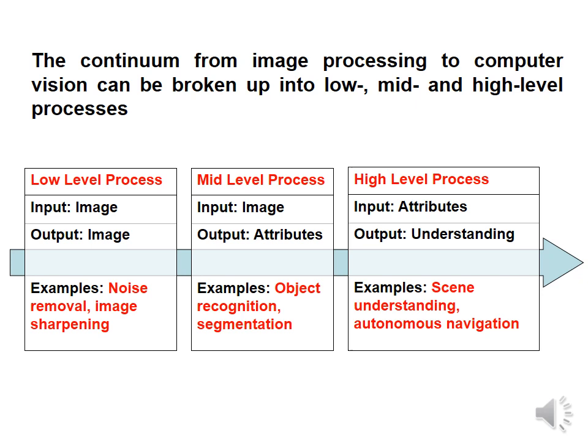In a low-level process, the input is an image and the output is also an image. In a mid-level process, the input is an image but the output is attributes — meaning characteristics of the image need to be extracted. In a high-level process, the input is attributes and the output is understanding — like identifying the situation of a scene, the surrounding conditions, or navigation. These are the three levels of processing.